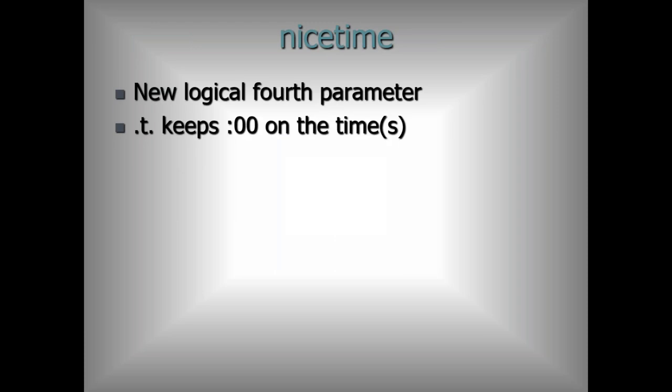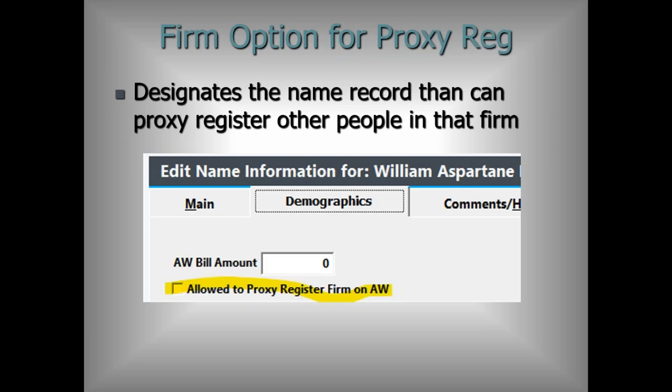Nice Time function: we're adding a new fourth parameter to keep the colon-zero-zero on times. Right now it just strips it — so you'd see '1 PM' instead of '1:00 PM.' If you have a listing of courses with times like 1 PM, 1:30, 1:45 and you want consistent spacing, you'll want this fourth parameter.